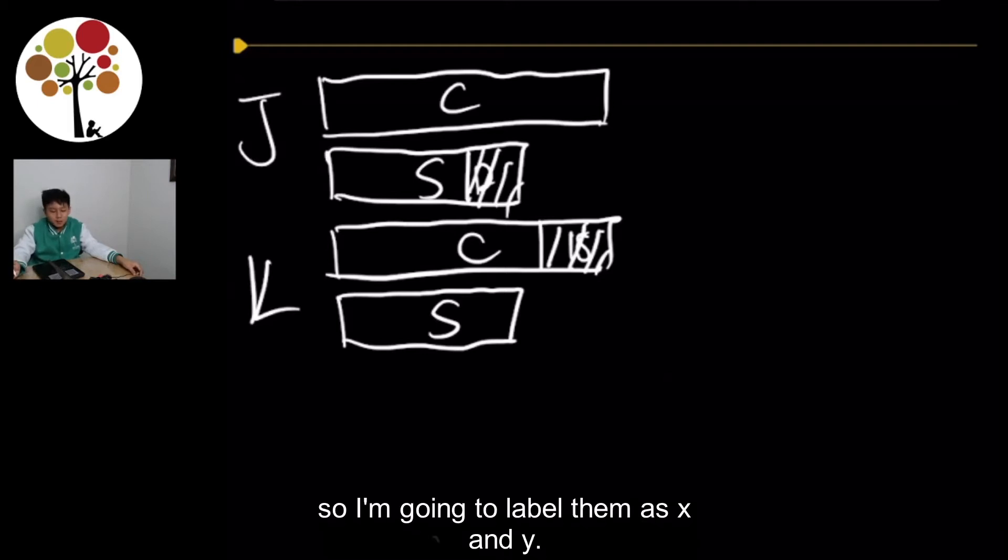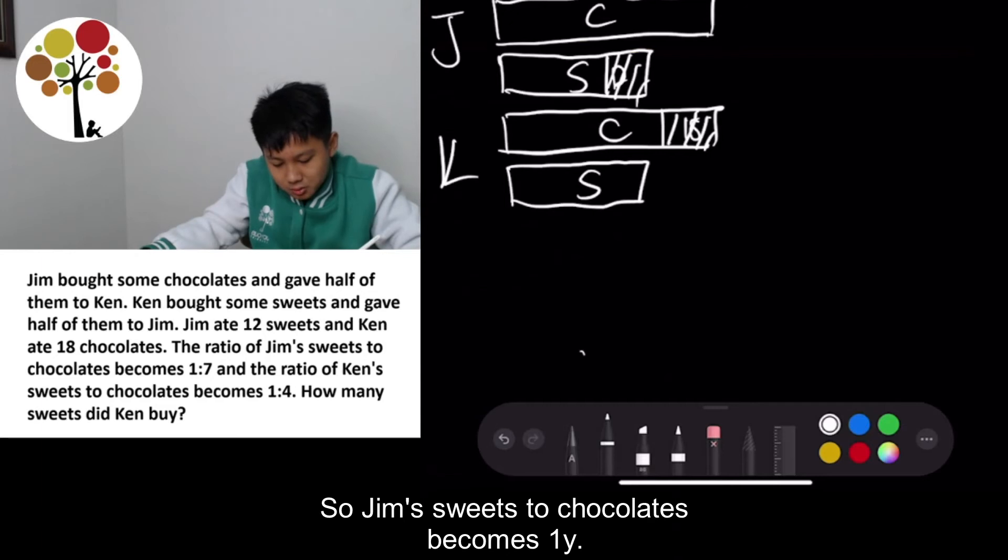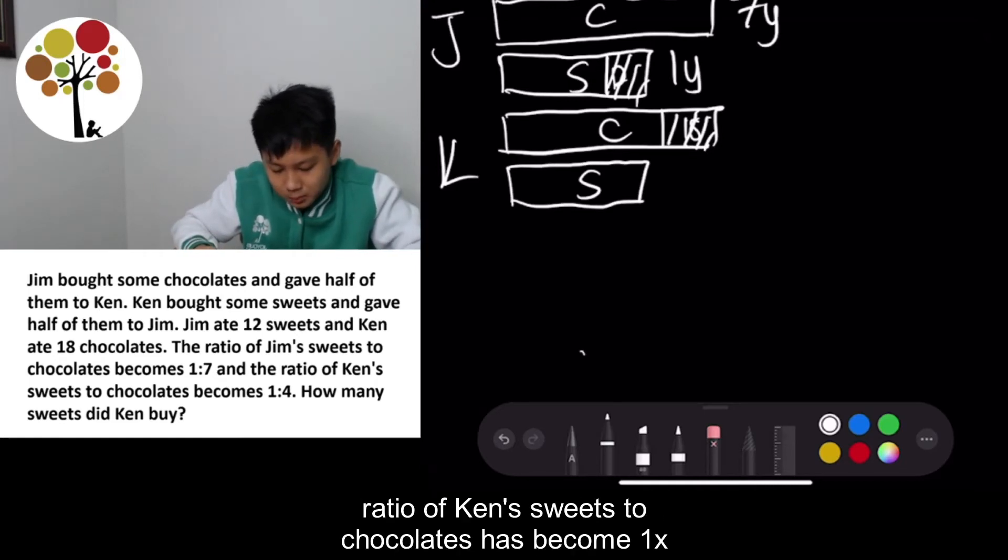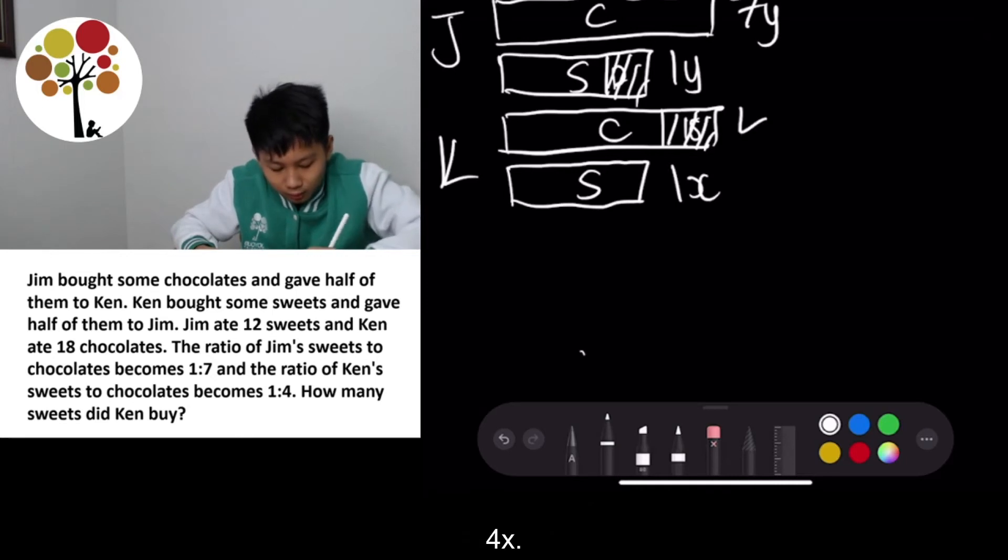Their units are not the same, so I'm going to label them as X and Y. So Jim's sweets to chocolates becomes 1Y. I'm just gonna put it as Y and X. 1Y to 7Y. And the ratio of Ken's sweets to chocolates become 1X to 4X.